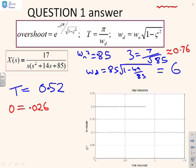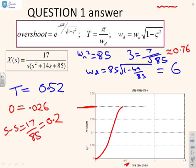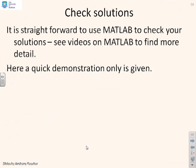So now what I can do is I can find the steady state. So the steady state is 17 over 85, which is 0.2. So there's the steady state. I can see this 0.5 is pretty close to the first time constant. The overshoot is only 2%. So I'm going to get something that pretty much does this.